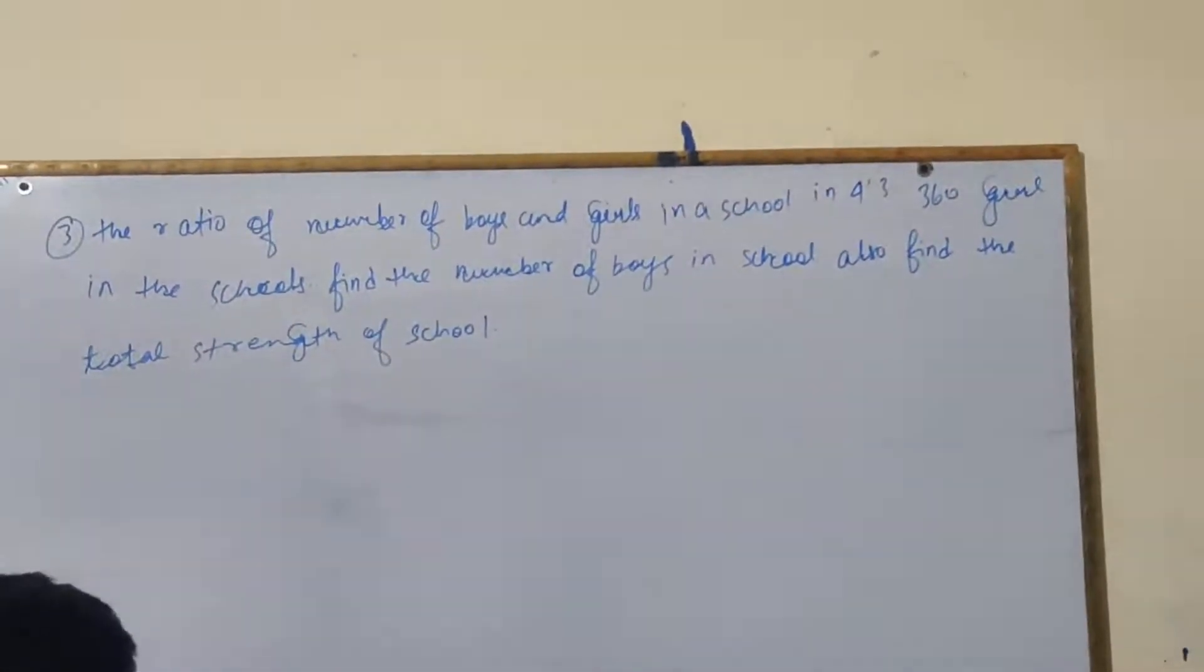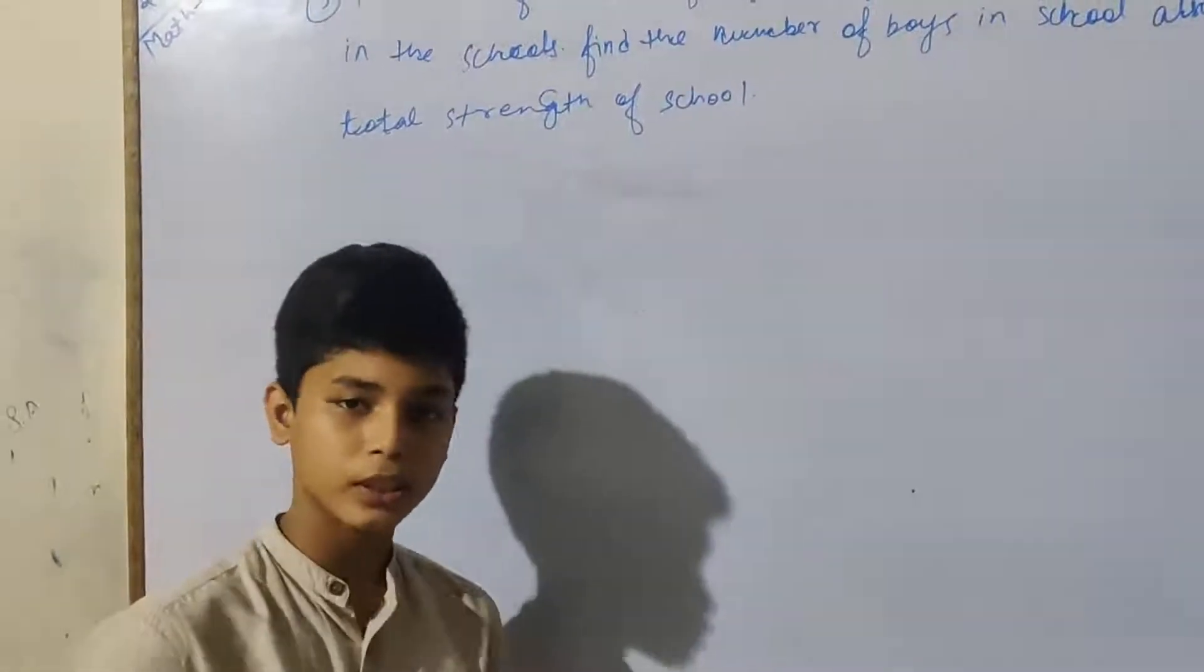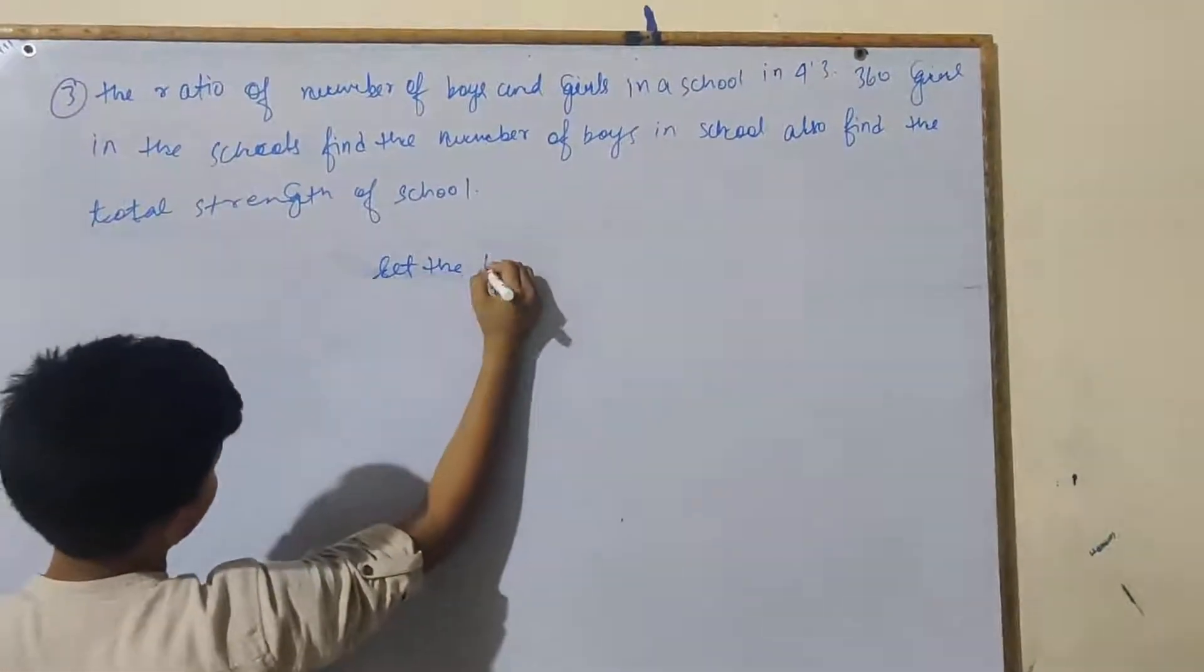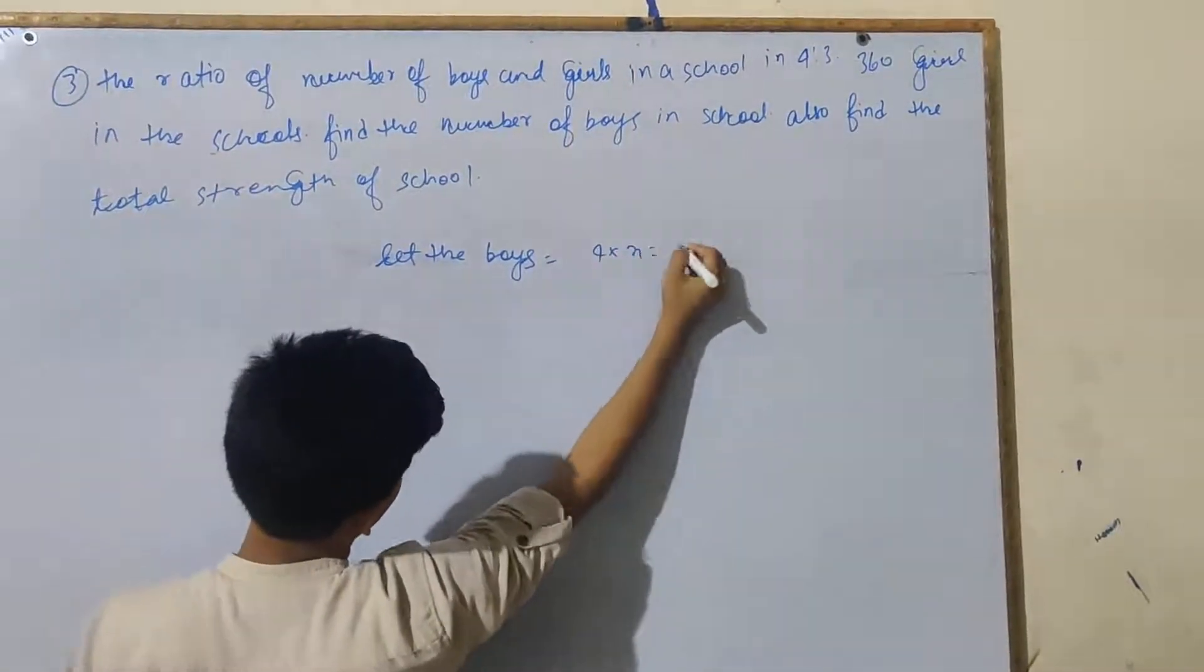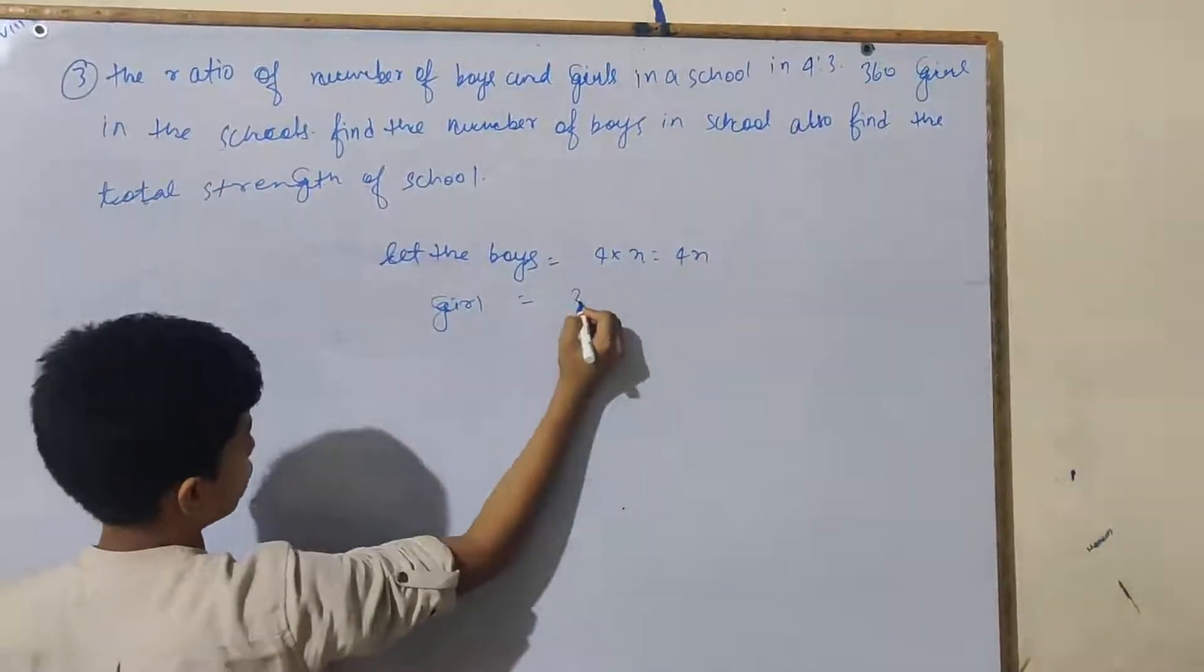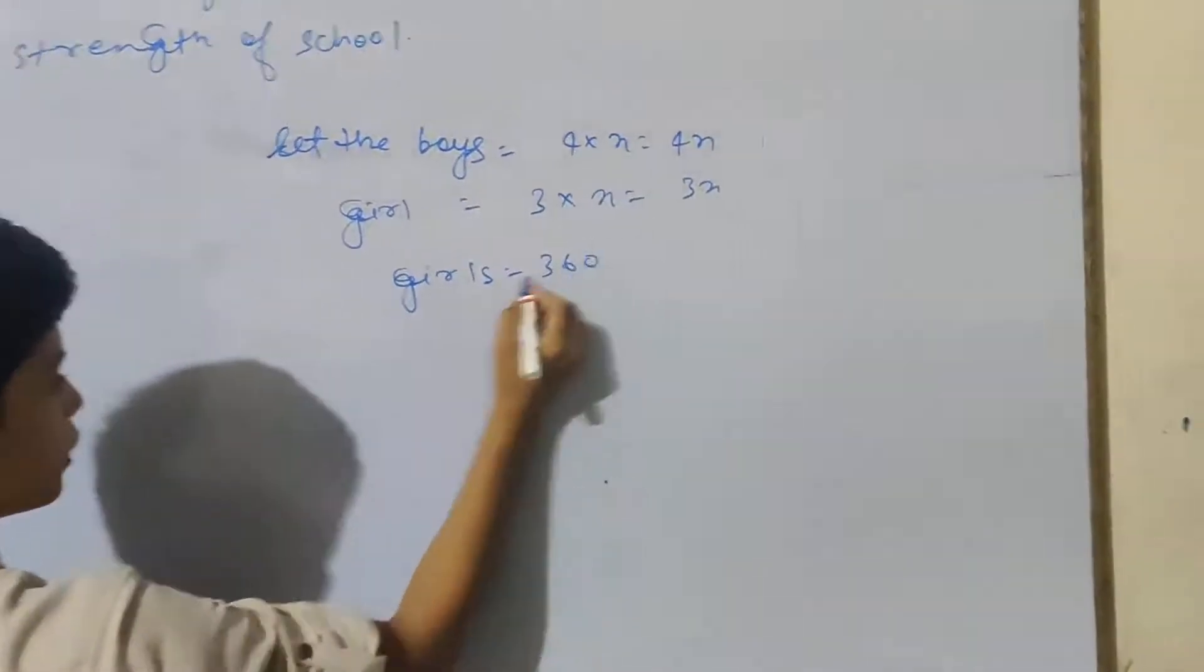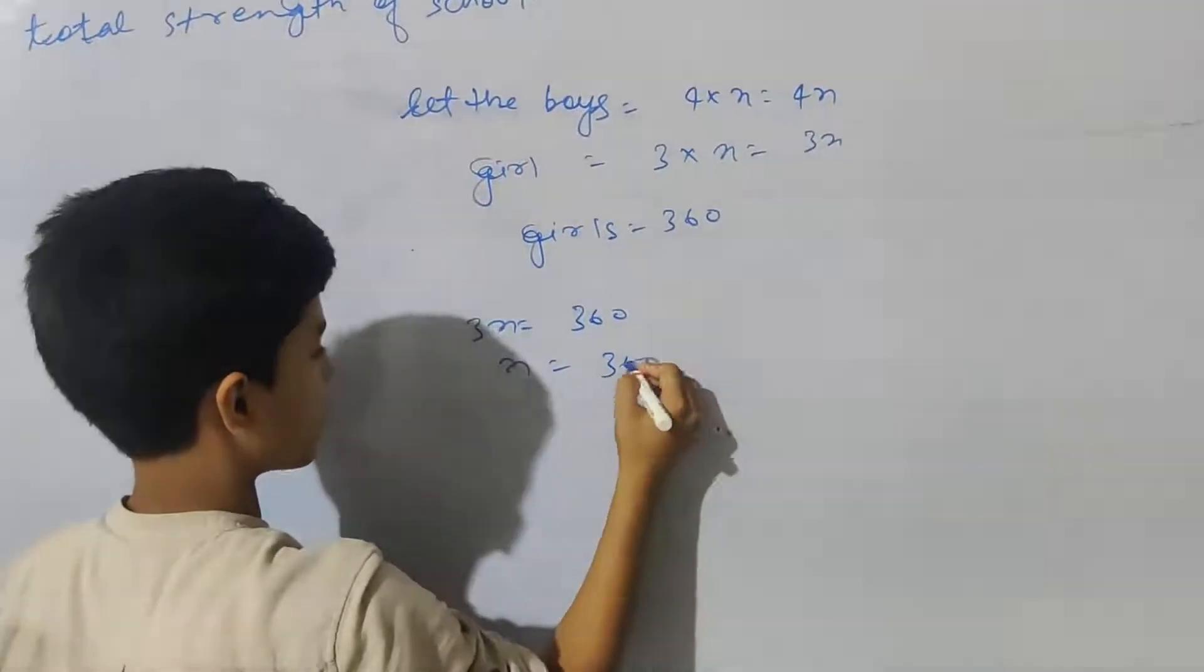Let's go to next question. Question number 3: The ratio of number of boys and girls in school is 4:3. There are 360 girls in the school. Find the number of boys in the school, also find the total strength of the school. Boys are 4 and girls are 3 in ratio 4:3. Let the boys equal 4X and girls equal 3X.